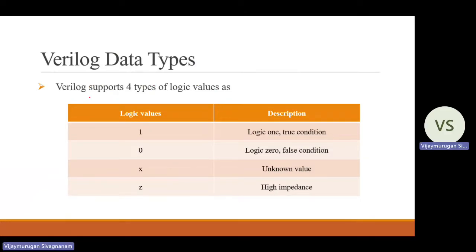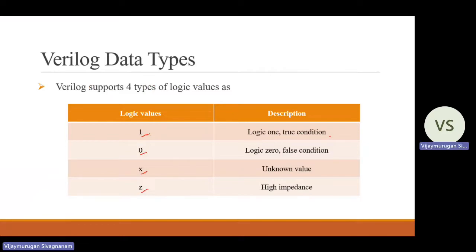Verilog HDL supports four types of logic values: 1, 0, X, and Z. Logic 1 represents a logical one or true condition — a high voltage. Logic 0 represents a false condition — in voltage terms, a ground connection. X represents an unknown value, meaning that particular variable is assigned either zero or one but is indeterminate. Z represents the high impedance state. These are the four types of logic values present in Verilog HDL.